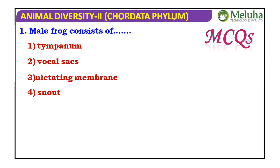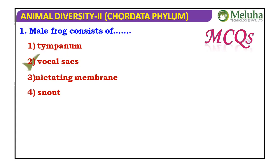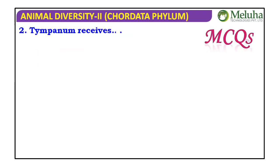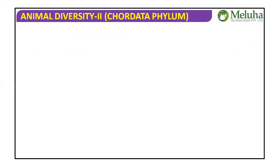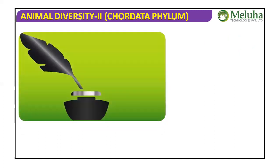The body cavity (coelom) of the frog accommodates different internal organs called viscera. It is an enterocoelom because the frog belongs to Subdivision Enterocoelomata. The internal organs are covered by visceral peritoneum, confirming a true coelom. The tympanum receives sound waves. This concludes Module 2 on the external features of the frog.